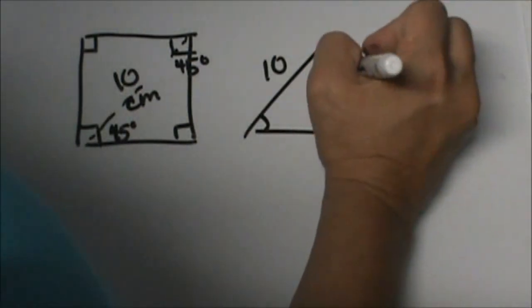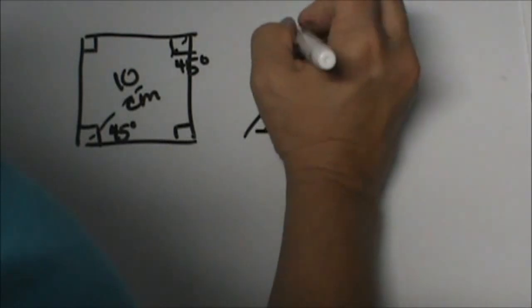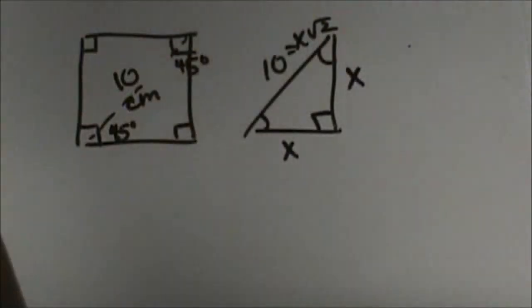Remember the rules for 45-45-90: X, X, X root 2. Two sides are the same so it's a root 2 problem.